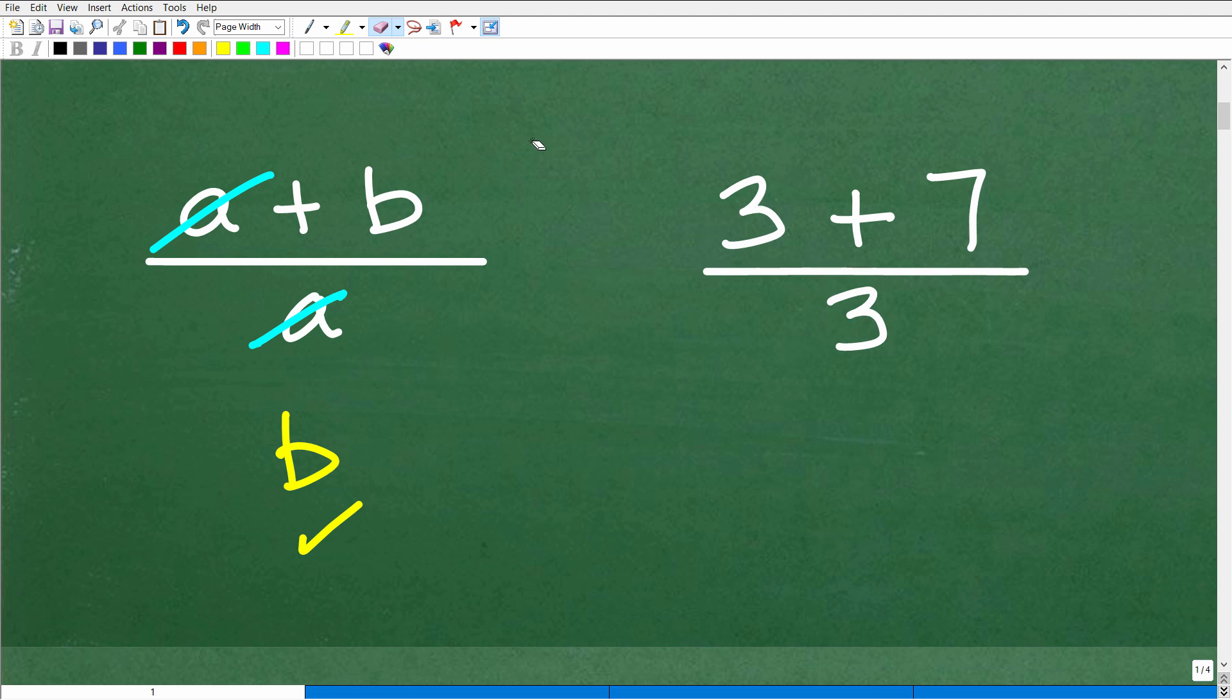Can we simplify this expression? The answer is no. This is as simple as it can get, and that'll be very clear if I put some parentheses around it. There's nothing I can do here. But here I got 3 plus 7 over 3. Well, 3 plus 7 is 10, and 10 divided by 3 - that's a simpler way of writing 3 plus 7.